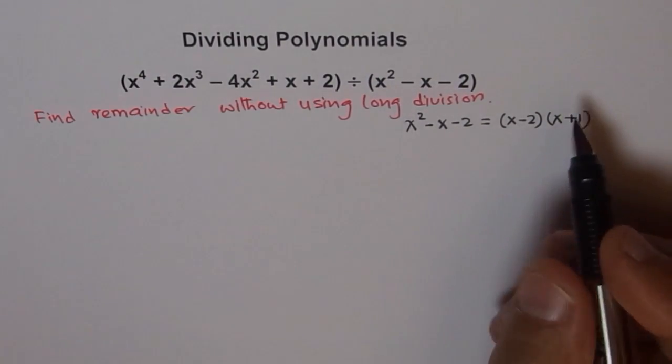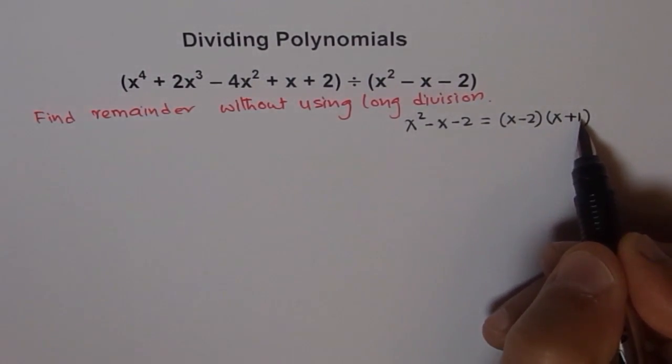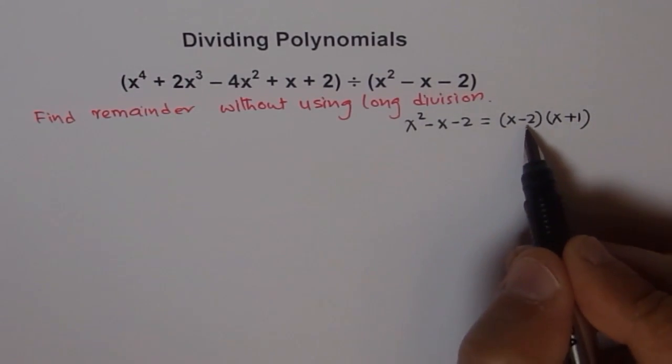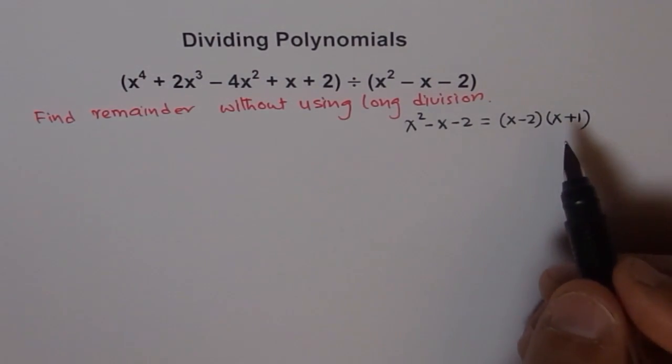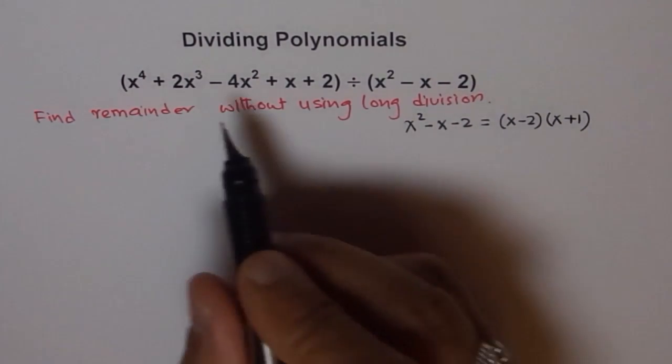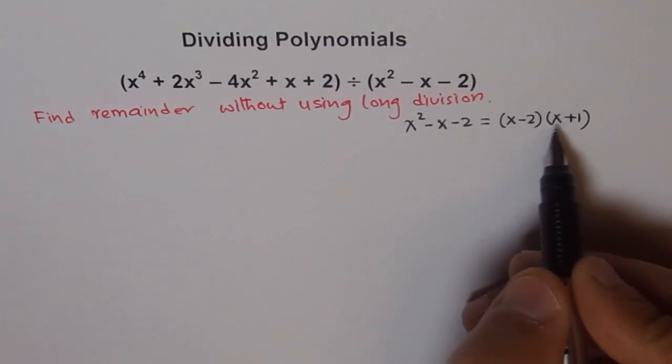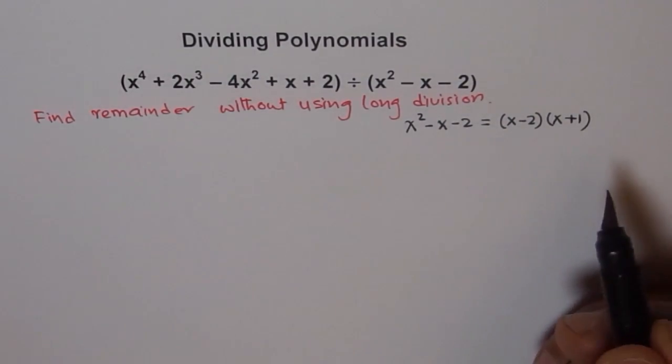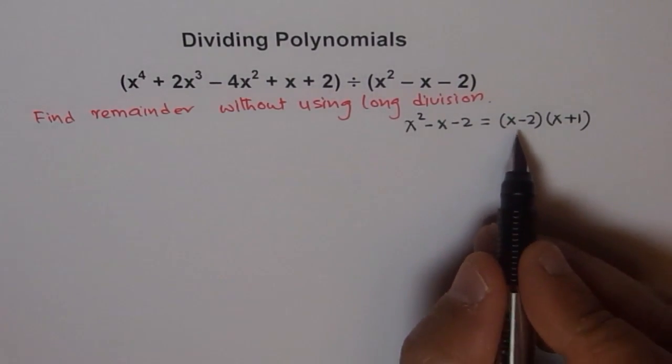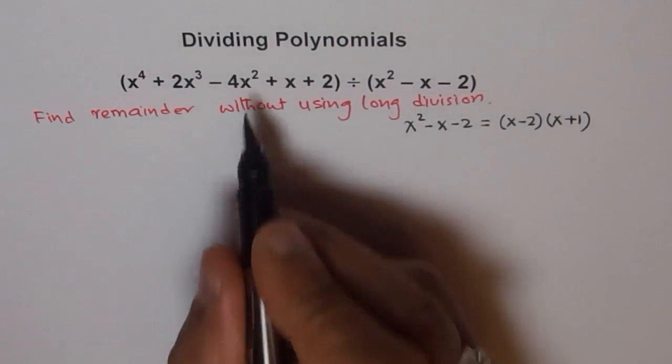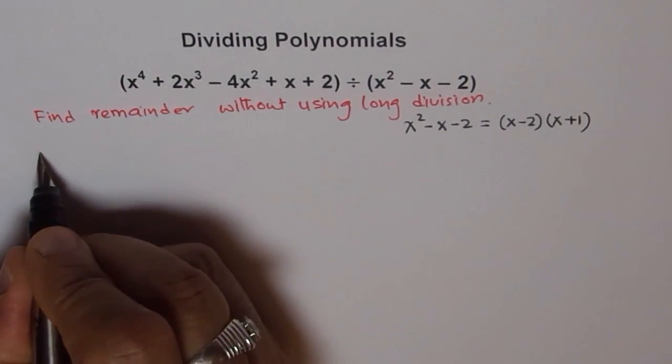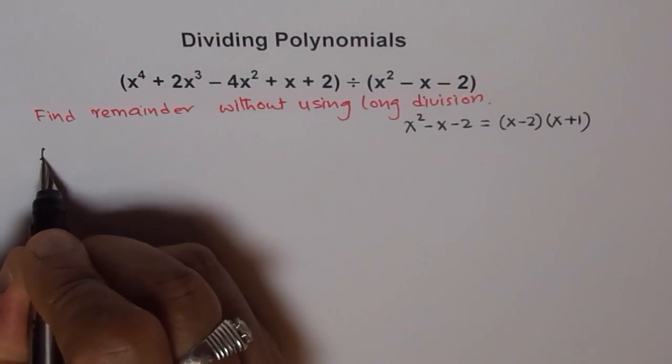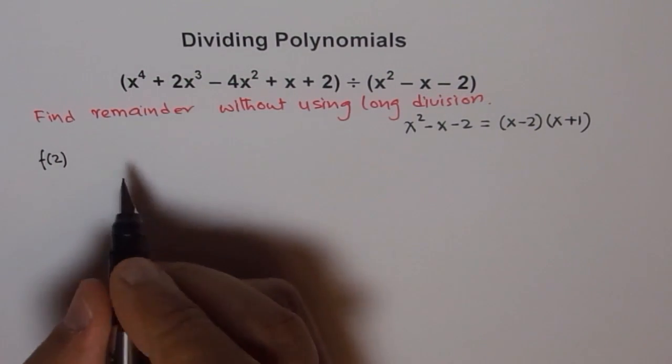When you multiply, you get this. -2 times 1 is -2, and difference of this and this is -1, and x times x is x². So basically, we are trying to divide this by that. And since the problem is to find the remainder, let's try to calculate what is f of 2 for this polynomial. Let me call this as f of 2, function is given, this is my function f.